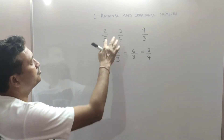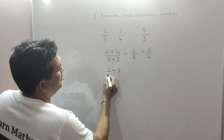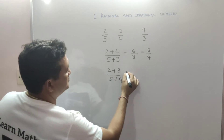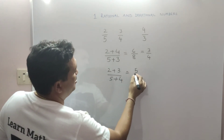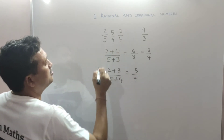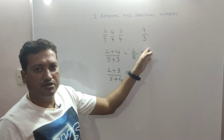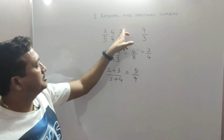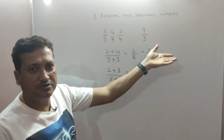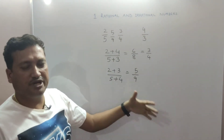To find a rational number between 2 upon 5 and 3 upon 4, we add: 2 plus 3 upon 5 plus 4, which gives 5 upon 9. So 5 upon 9 is one of the rational numbers lying between 2 upon 5 and 4 upon 3. Similarly, you can add 3 plus 4 upon 4 plus 3 to get another rational number, and you can keep on doing the same process to get more rational numbers between 2 upon 5 and 4 upon 3.